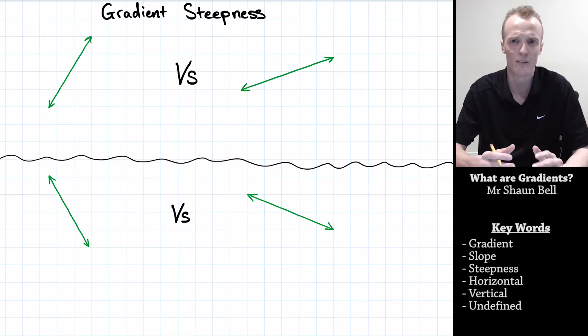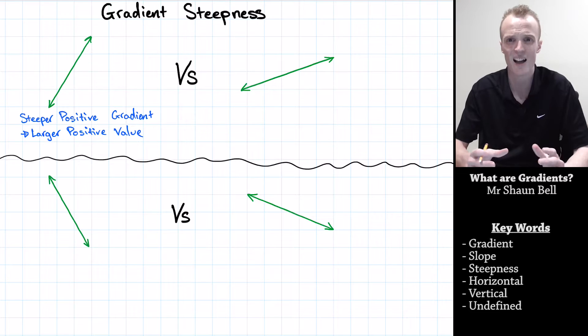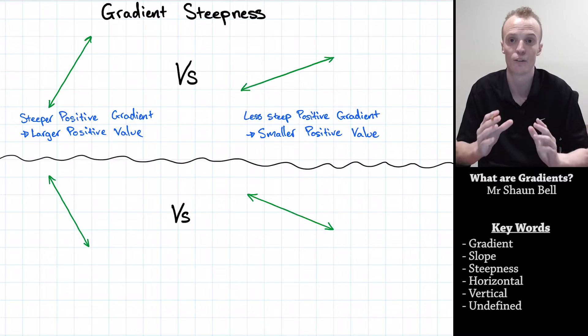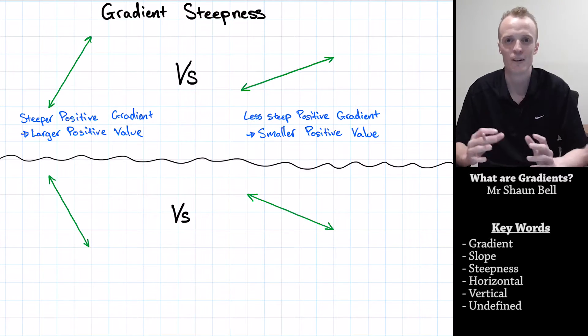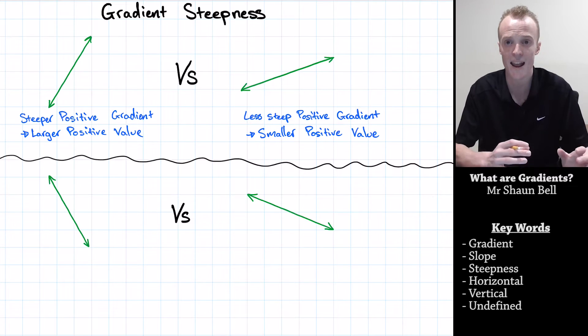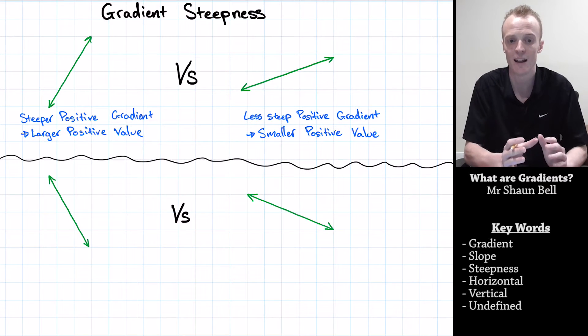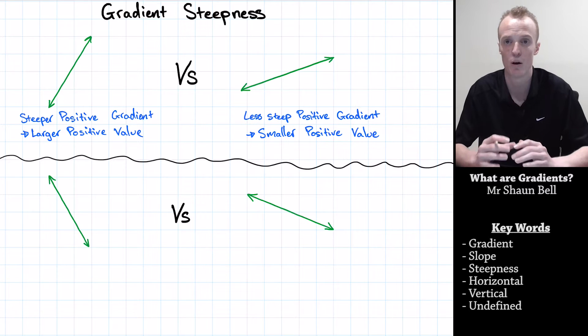For example, let's focus on the positive gradients up the top here. On the left hand side, we've got a much steeper line than on the right hand side. How do we describe these? On the left, because it's steeper, we give it a larger positive value to describe this line. Whereas where a gradient is less steep, we give it a smaller positive value. For example, if I compare the gradient of 1 to the gradient of 10, 10 is a larger positive number. Therefore, the gradient of 10 is a steeper positive gradient.